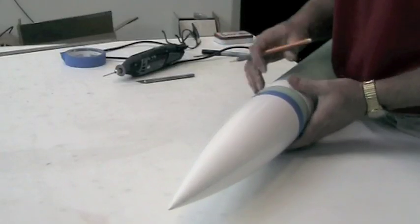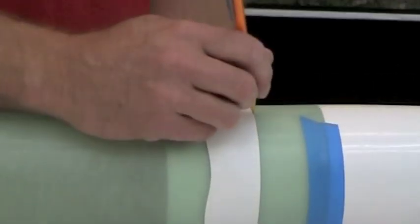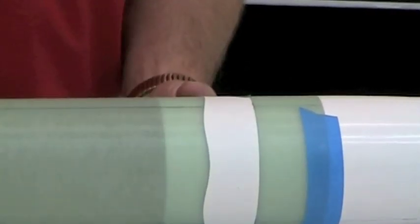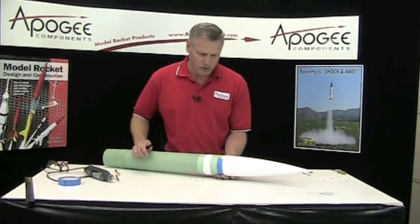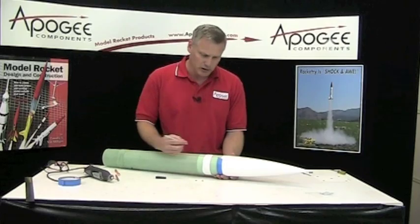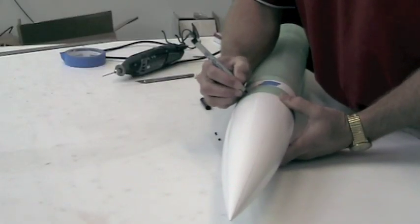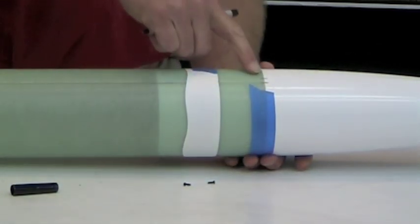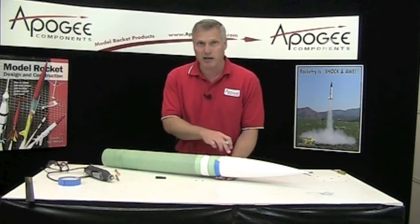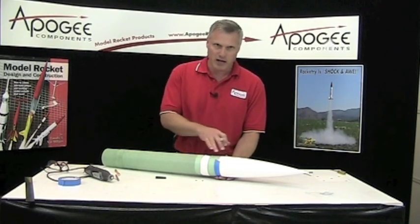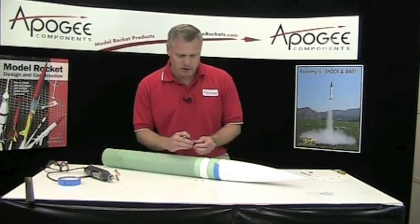I'm going to put one there, one there, and one there. Just like we did before, we also need witness marks so that we can line up the nose cone later. When you go to paint the rocket, you're going to need to redraw these lines. You can make them smaller or match whatever color of the rocket you're going to do, but that will help us line things up.